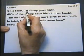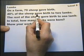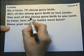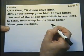On a farm, 70 sheep gave birth. 40% of the sheep gave birth to two lambs. The rest of the sheep gave birth to one lamb. In total, how many lambs were born?